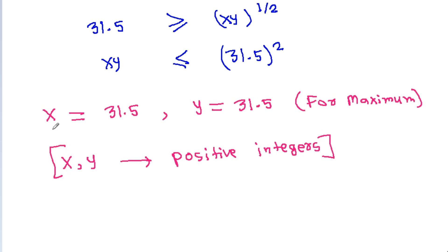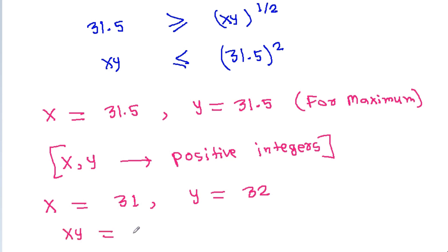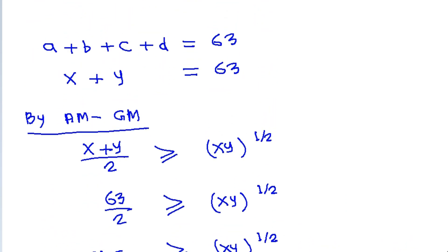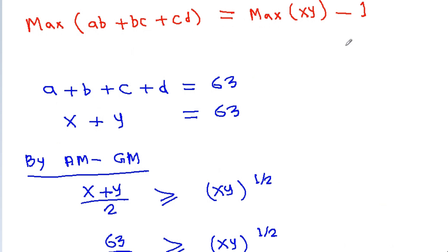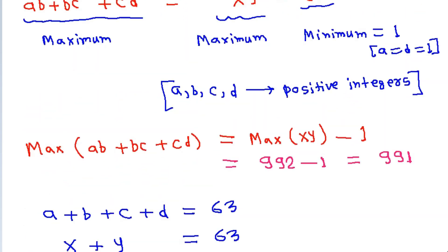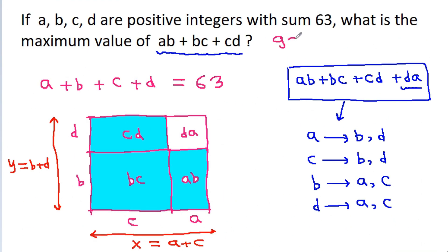Since x and y must be positive integers with x + y = 63, one of them equals 31 and the other equals 32. So the maximum of xy is 31 × 32 = 992. Therefore, the maximum value of ab + bc + cd is 992 − 1 = 991.